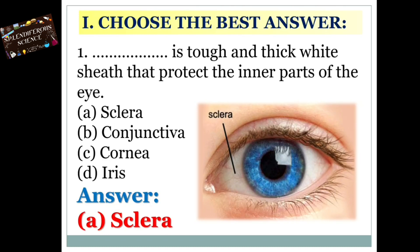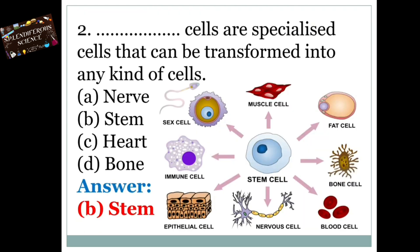Option A: Sclera. Option B: Conjunctiva. Option C: Cornea. Option D: Iris. The answer is Sclera. Sclera is tough and thick white sheet that protects the inner parts of the eye.